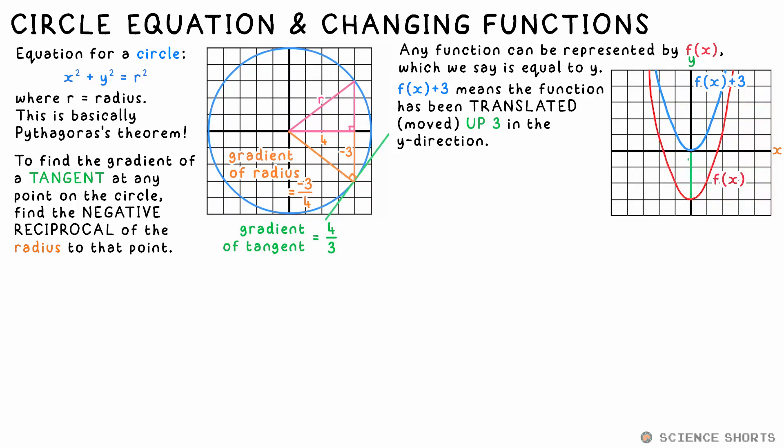then f of x plus 3 means that every y value is increased by 3. It's been translated upwards. To translate sideways along the x axis however, we say it's no longer f of x, but f of x plus 2 doesn't mean it moves to the right, but this time it's translated to the left.